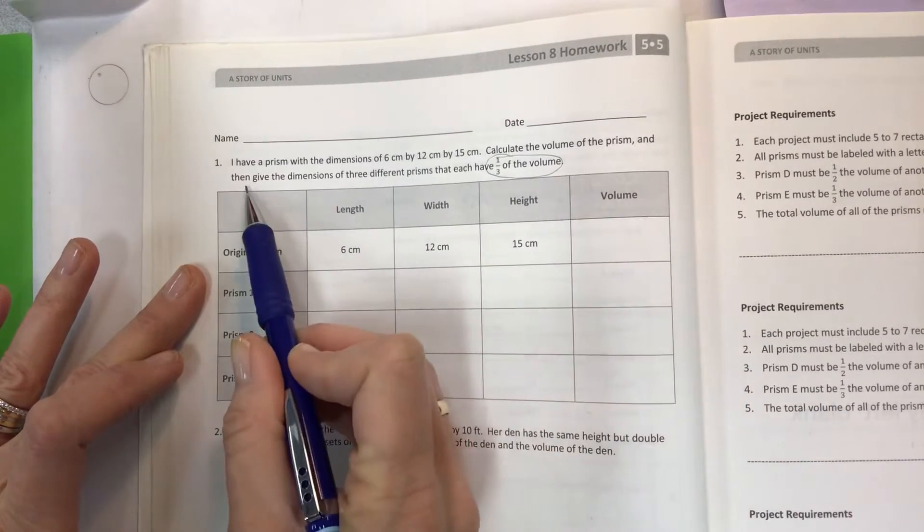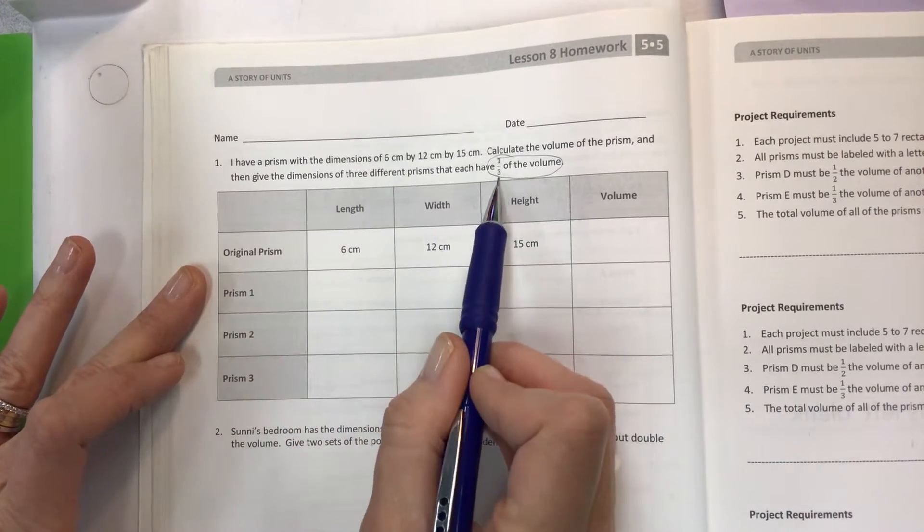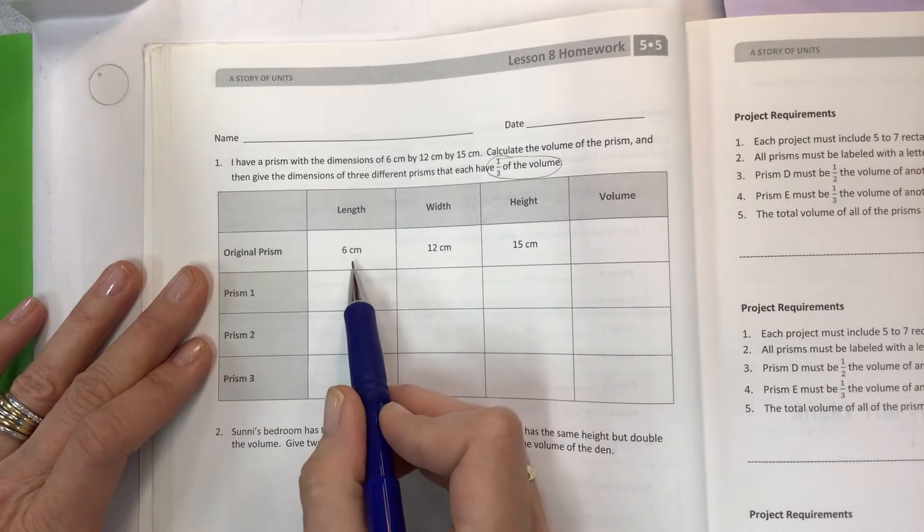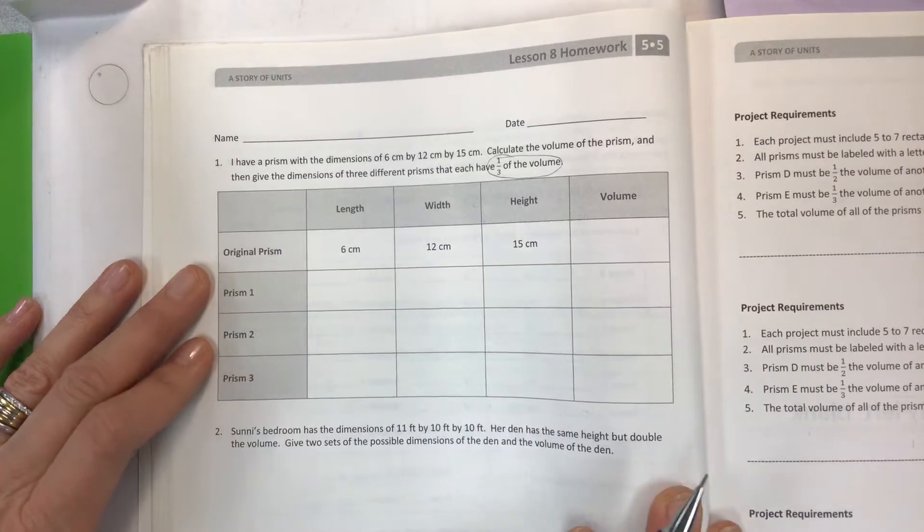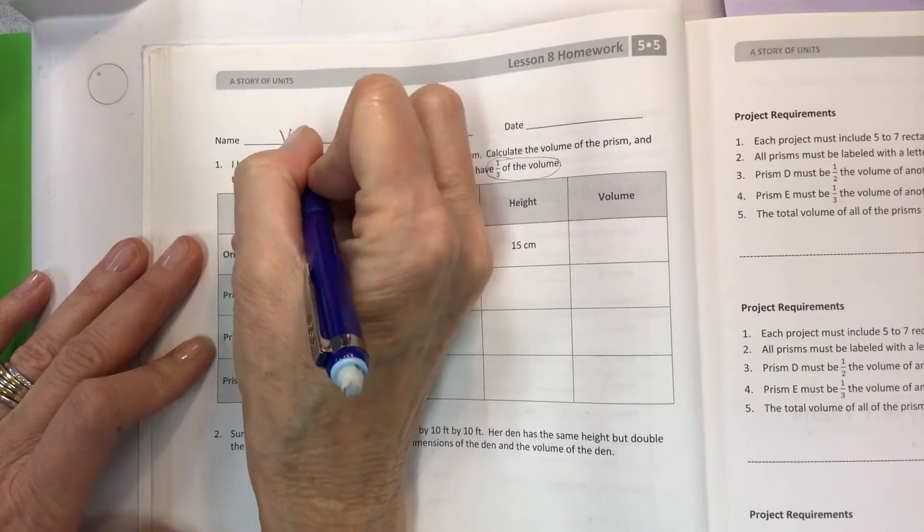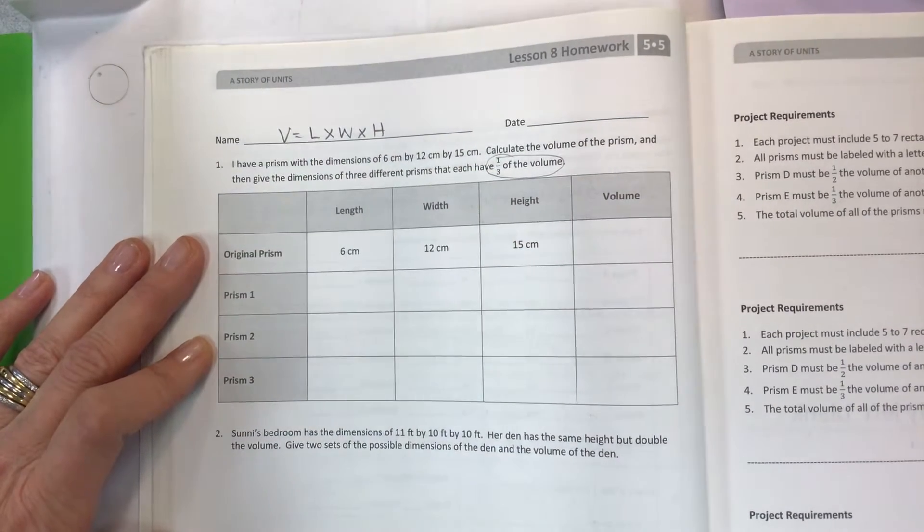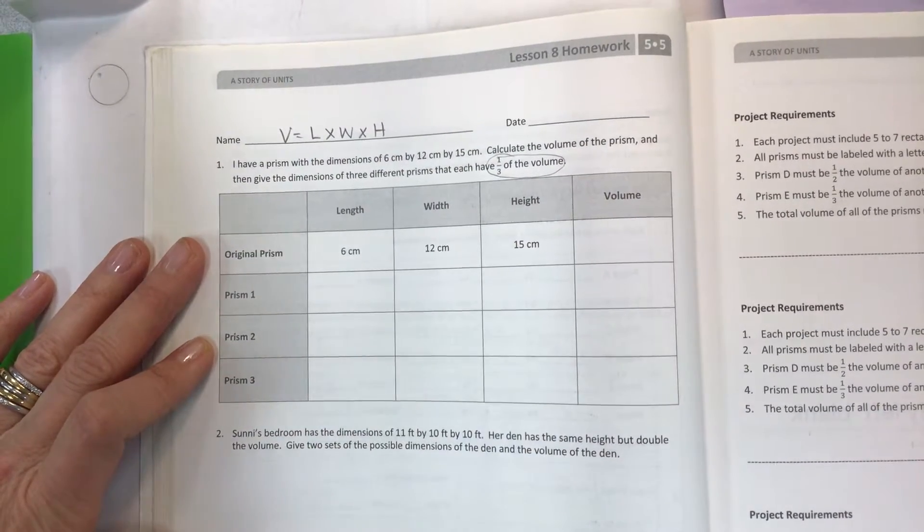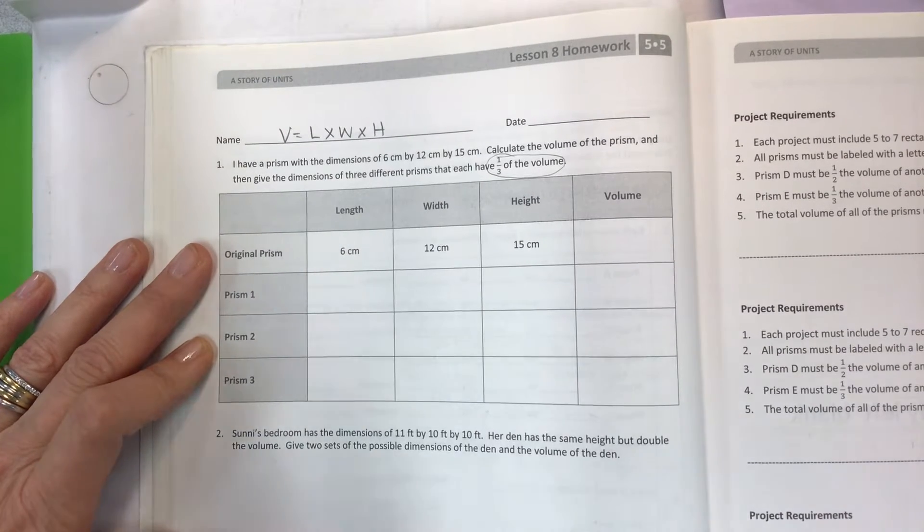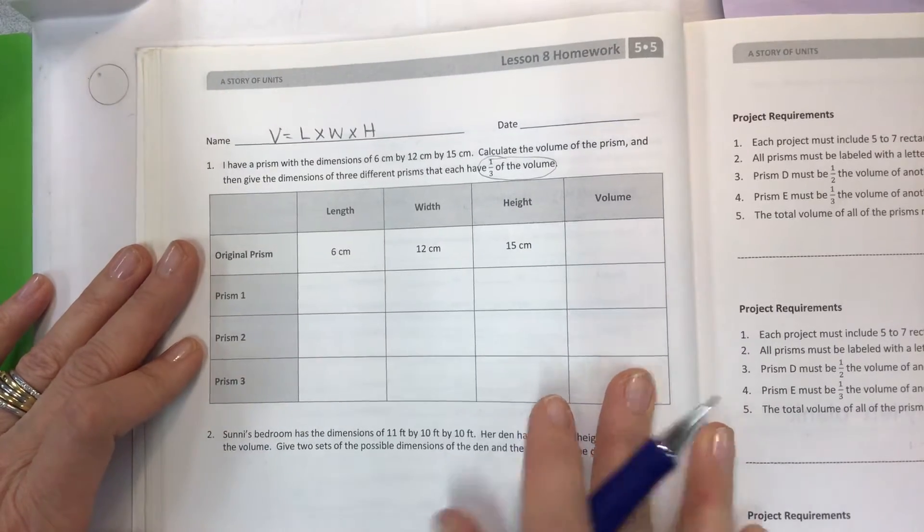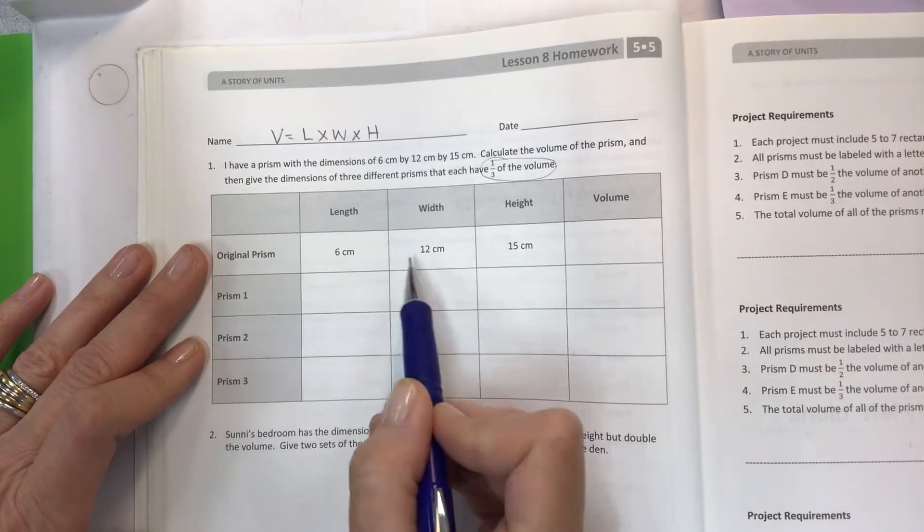First thing is, of course, we're going to recognize that we have our formula that we use to find volume: length times width times height. I try to put that at the top of every page so that you guys will remember it, because you'll have to know this on your tests—state tests, district tests, class tests, all of the tests—and forever. You just need to know that for life.